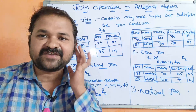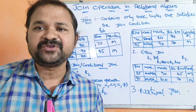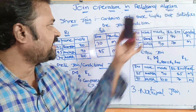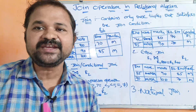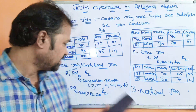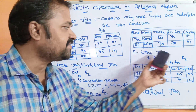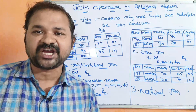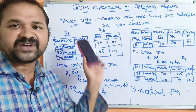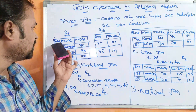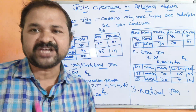Now let us discuss the first join, that is inner join. Inner join produces only those tuples that satisfy the matching criteria, that satisfy the join condition. We have three types of inner join. The first one is theta join or conditional join, the second one is equi join, and the third one is natural join. Here we have two relations R1 and R2. The first relation has three attributes: roll number, name, and marks. The second relation has two attributes: roll number and gender.